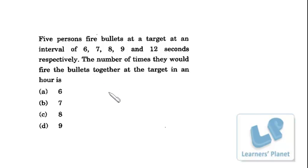I just take a small example to explain this concept. Suppose there are only two persons and they are maybe ringing the bell, one is at every three seconds and other is at every say four seconds, right? At every three seconds first one, and second one at every four seconds.